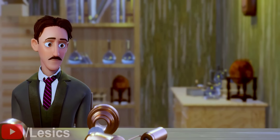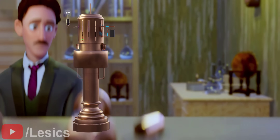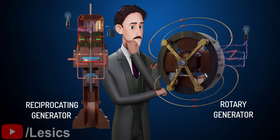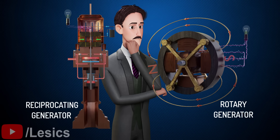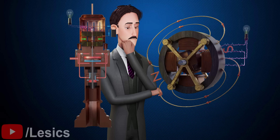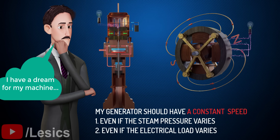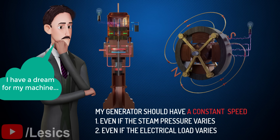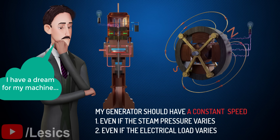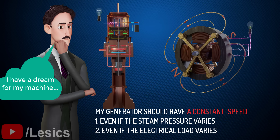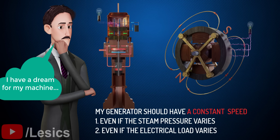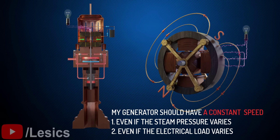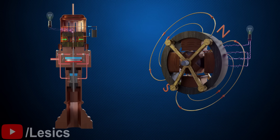In the late 1880s, alternating current generator development was on the forefront of innovation. Nikola Tesla invented the rotary generator first and the reciprocating generator later. The purpose behind the reciprocating design was to achieve constant frequency current output, even if the steam pressure and electrical load varied, which is a crucial characteristic in power generation applications. The rotary generators were inefficient to satisfy this requirement at that time.